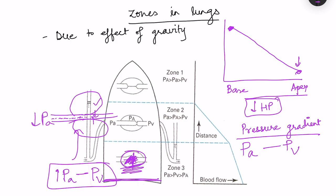Moving further up, a point is reached where alveolar pressure compresses the vessels slightly more, creating a point of constriction followed by sudden increased flow — this is known as the waterfall effect. In this region, the driving force becomes pulmonary arterial pressure minus pulmonary alveolar pressure (capital A for alveoli), because alveolar pressure becomes the limiting factor.